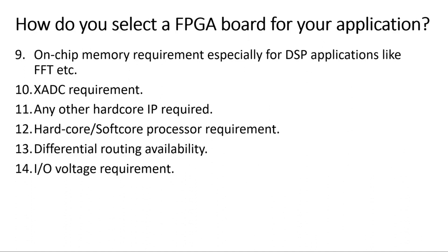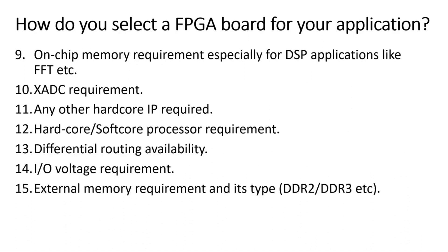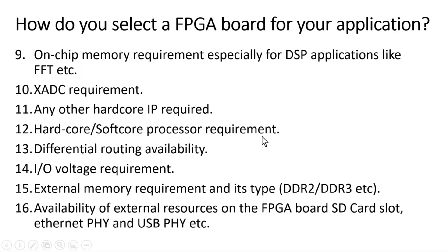The fifteenth point is external memory requirement and its type. If your system is complex and processor-based, and on-chip memory is insufficient, you will require external memory on the board. Typically DDR memories are chosen, and DDR memory has different types — DDR2, DDR3, and DDR4. According to your application you should determine which type of memory you require and check the FPGA board specification accordingly.